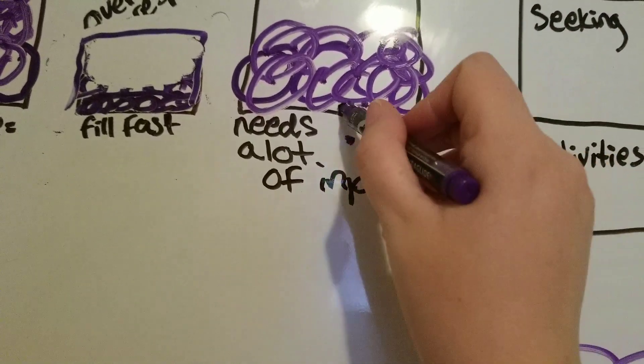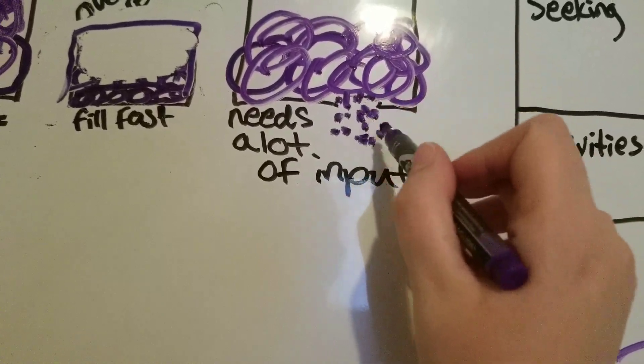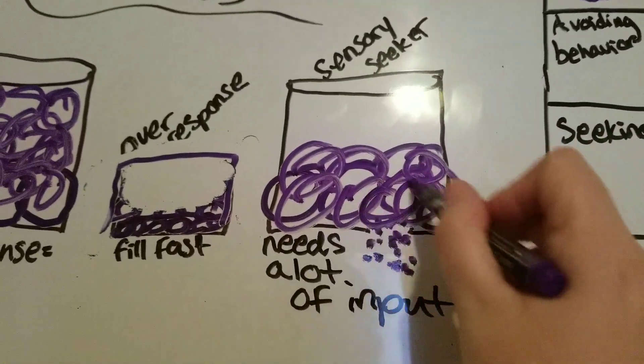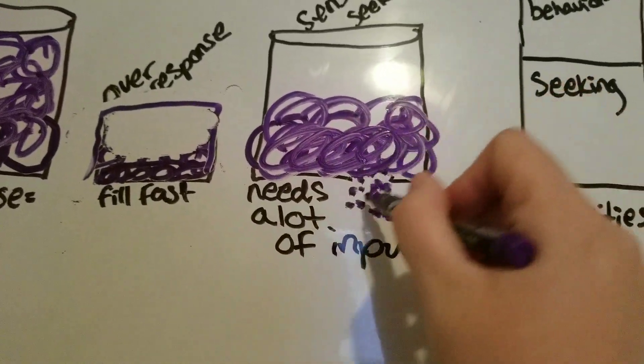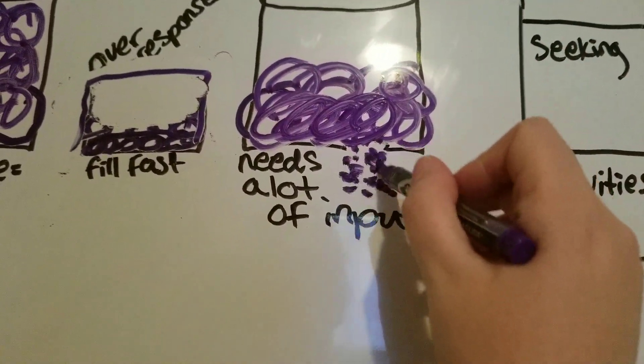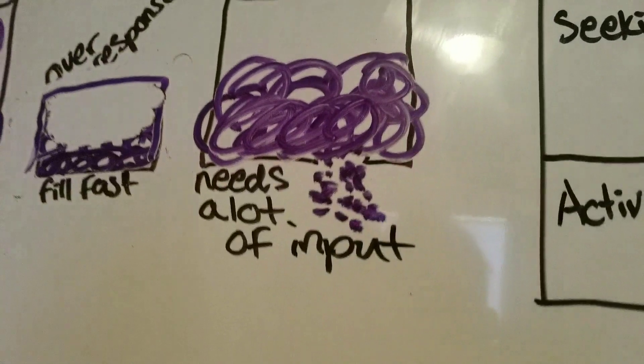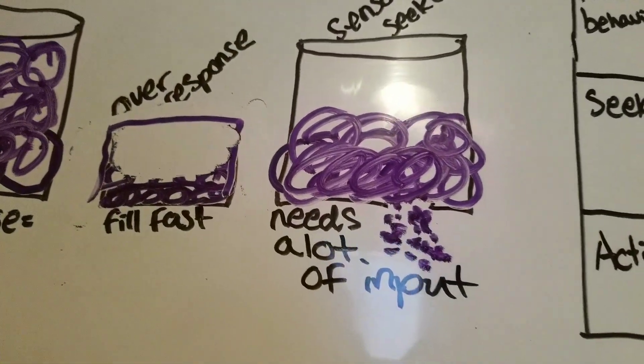So every time he's receiving some input, it's quickly going out, and he's needing more, and he cannot get satisfied because it keeps pouring out. This is where heavy work is crucial, crab walks,